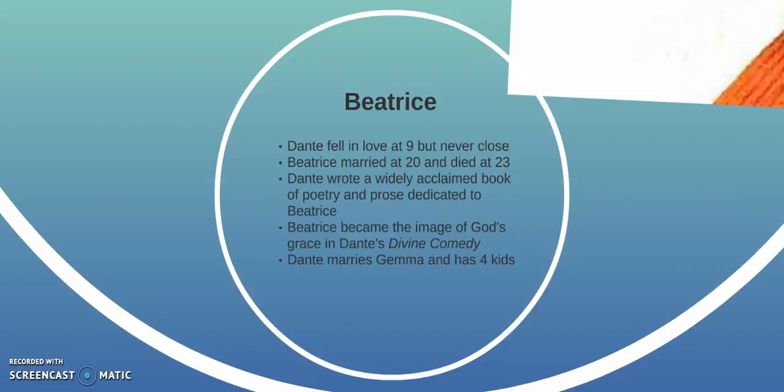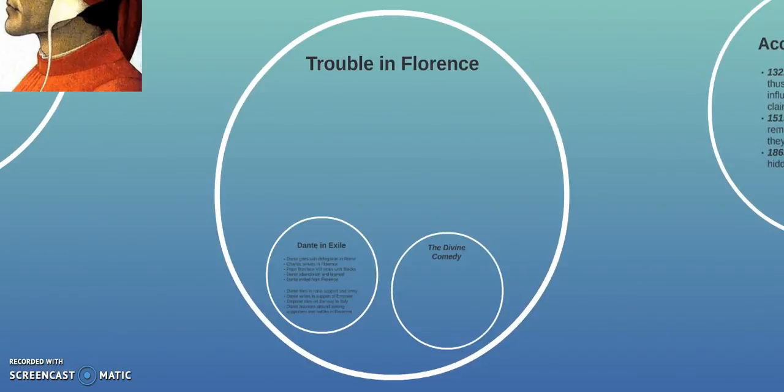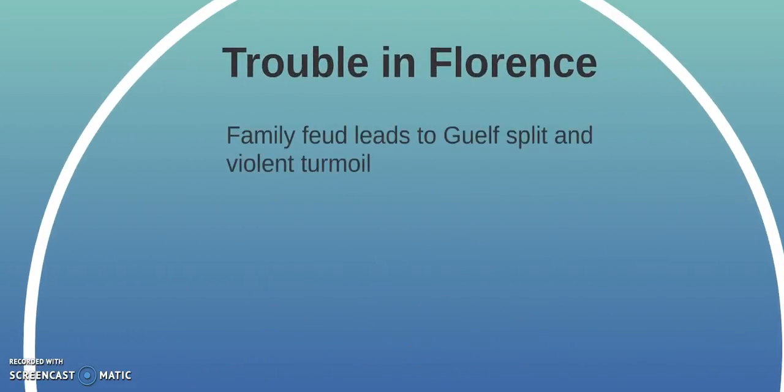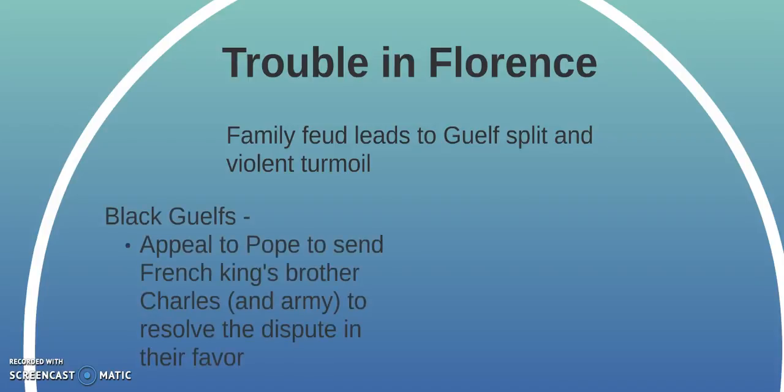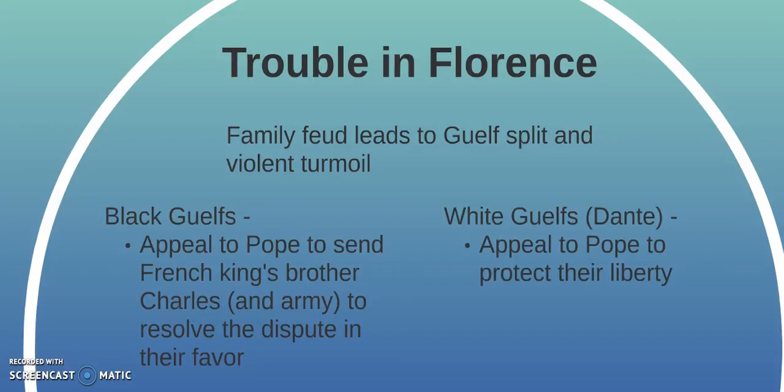Dante eventually marries and has four kids. Unfortunately, while the Guelphs ruled in Florence with their constitutional council, trouble arose. A family feud in another town led to a Guelph split and violent turmoil, creating two parties. The Black Guelphs appealed to the Pope — remember, Guelphs are loyal to the Pope — to send the French King's brother Charles and his army to resolve the dispute in their favor. The White Guelphs, who Dante was part of, wanted to appeal to the Pope to protect their liberty and not use Charles.